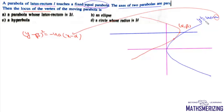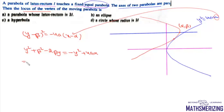After substitution, the equation becomes: y² + β² − 2βy + β² − 4aα = 0, which simplifies to a quadratic in y.